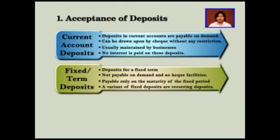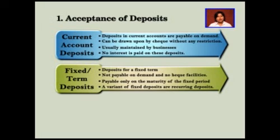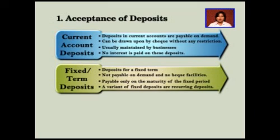The second type of account is the fixed or term deposit account. These accounts are not payable on demand and do not enjoy cheque facilities. The money once deposited can be withdrawn at the time of maturity of the fixed period. If the person wants to withdraw money before the fixed period, that is before the maturity date, then a certain penalty is levied. The other form of fixed or term deposit is known as recurring deposit accounts, wherein the depositor makes regular payments of the agreed sum exceeding Rs. 100 per month for a stipulated time period. Interest is paid on the deposits in these accounts.